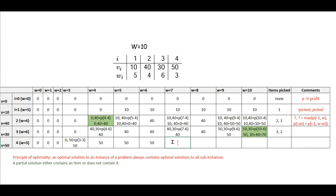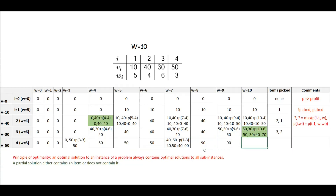For w equal to 7, applying the same principle of optimality: if we do not pick an item, our profit is 40 for this constraint. Otherwise, our solution is going to be 50 plus profit from the remaining weight, which is 7 minus 3 equals 4. P4 is 40. So our solution is either 40 or 50 plus 40, which is 90. Similarly for w equal to 8 and w equal to 9, it is 90. And for w equal to 10, it is also 90. This is our final cell.